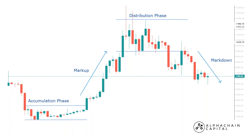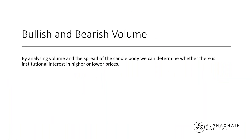Being able to identify this is really going to help those looking not only at trading with VSA, but other types of strategies as well. These aren't always obvious to spot — what I'm showing here are clear examples to really hit home the concepts. If we can tell in which direction the larger players are trading, we can try to ensure that we are trading on the right side of their trade and not against them. By analysing volume in the market as well as the spread of the candle body — the part between the open and close — we can determine whether there is institutional interest in higher or lower prices.